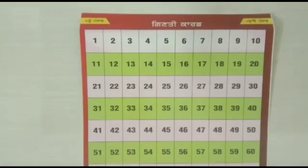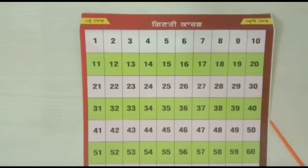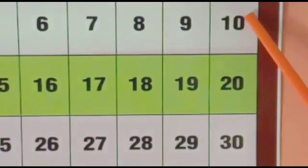Now here we have a number card. Let's see which number will come after 10 by the difference of 10 numbers. So after 10 the number will be 20. Then 30. Then 40. Then 50. And then 60. By the difference of 10.